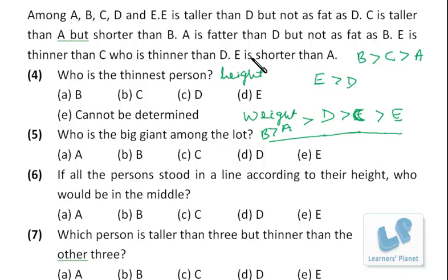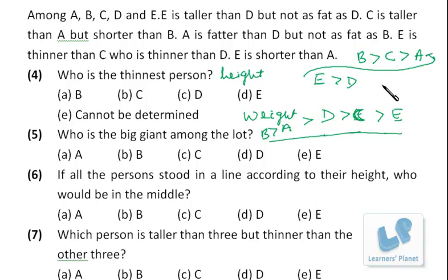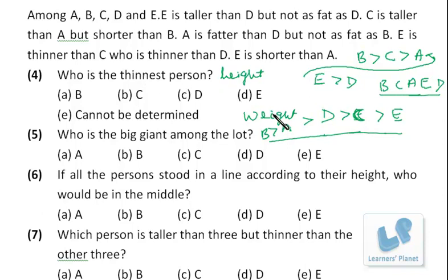Now we arrange heights. E is shorter than A. B is taller than C, C is taller than A, and E is shorter than A. The height sequence is B, C, A, E, D. So the height sequence in decreasing order is B, C, A, E, D and the weight sequence in decreasing order is B, A, D, C, E.